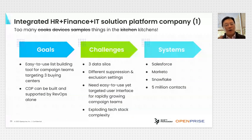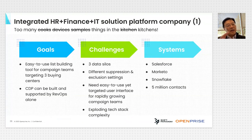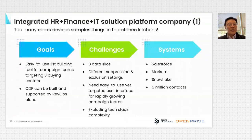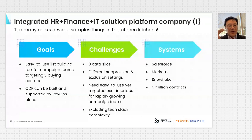Let me end with a customer story. This company is a SaaS company offering an integrated HR, finance, and IT solution—a modern ERP back-office automation solution. They've been on a tear growth-wise and built up a complex technology footprint on the go-to-market side. Their goal: a much easier way for the campaign team to build lists to support global marketing campaigns. They have three buying centers—HR, finance, and IT—so very complex targeting: you don't want to send HR-targeted emails to finance people. They currently don't have the ability to do this level of targeting efficiently.